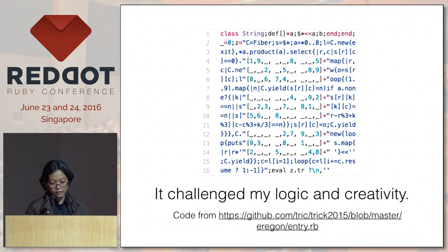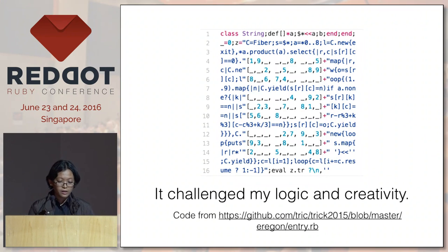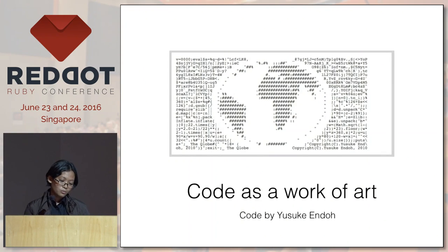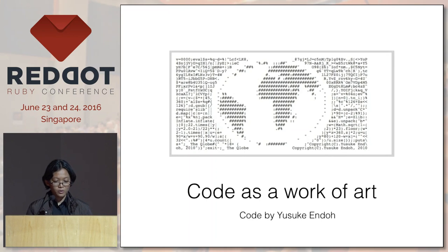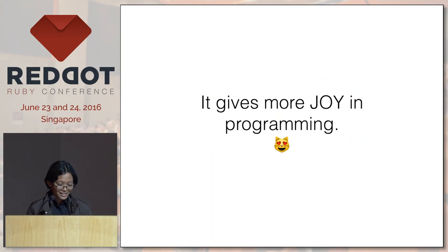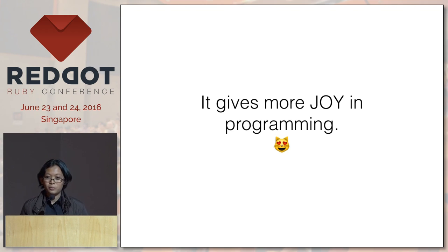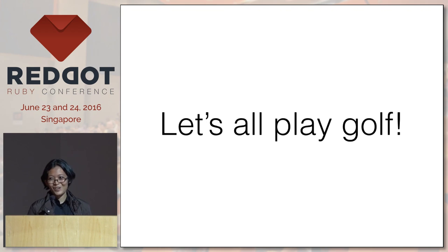It challenged my logic and creativity. This code was from the last RubyKaigi, from a contest they had — there's a Sudoku solver and the puzzle is embedded inside the code. This is like the next step: it's like making code with art. If you know how to shorten your code, you can manipulate it to look something like a painting. I would like to do that someday. And like Matt said, we should always have joy in programming. RubyGolf provides new challenges and it gives more joy in programming. So let's all play golf. Thank you.